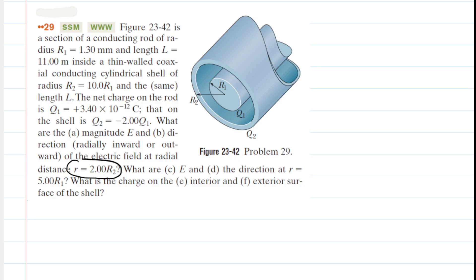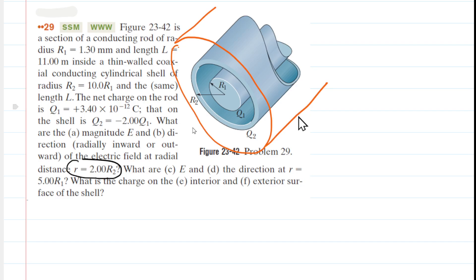To do that, we're going to have to create a fictitious surface called a Gaussian surface. We want to choose the geometry of our Gaussian surface to coincide with the geometry of this structure. Since we have cylindrical structures, we're going to choose a cylindrical Gaussian surface. That Gaussian surface encloses both structures, which is going to become important when we apply Gauss's law.